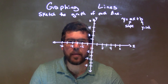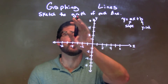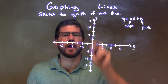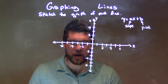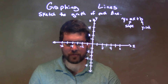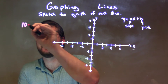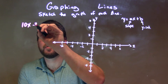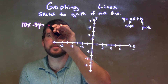Hi, I'm Sean Gannon, and this is MinuteMath, and today we're going to learn about graphing lines. We're going to sketch the graph of each line. So if I was given this graph of this line, 10x minus 3y equals 15.